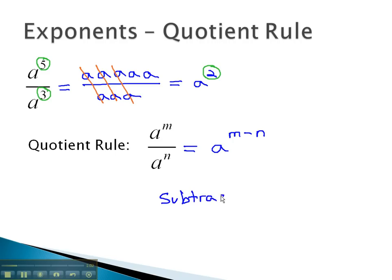With the quotient rule, we subtract the exponents. Let's take a look at a few examples where we can see this quotient rule work out.